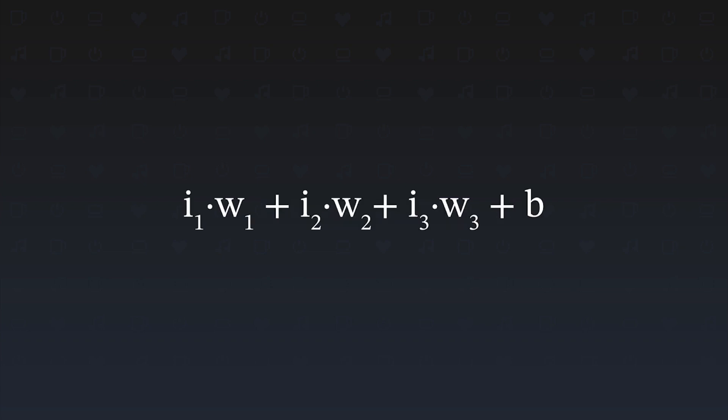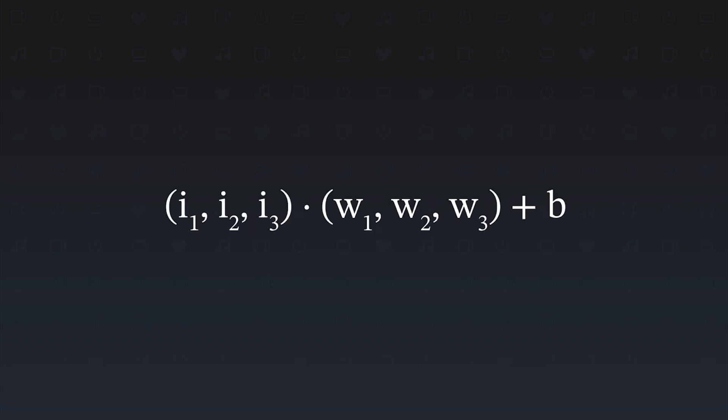The activation value — that's what goes into the activation function inside a neuron — is calculated like this. All the inputs are multiplied with their associated weights: i1 times w1, i2 times w2, and so on. On top of that, we add the bias. We can write this with two vectors using the dot product between them. If you have no idea what a dot product is, I'll show you.